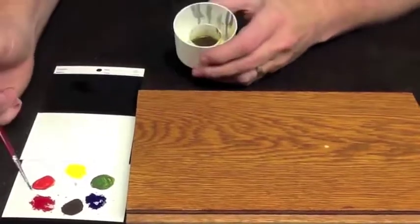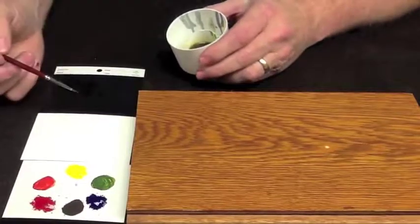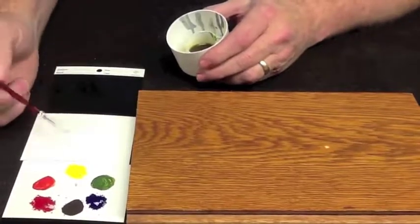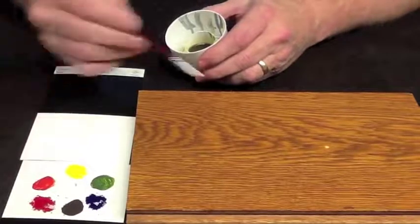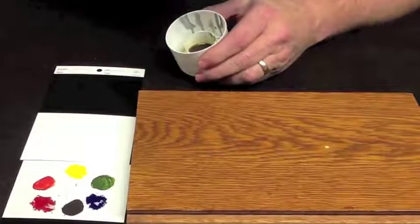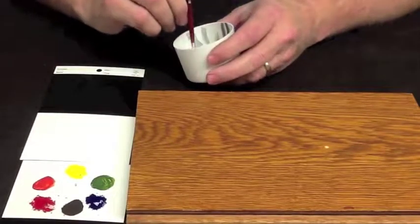So we're going to start with our primary colors, and I've got a little clear material here that I'll use as the vehicle for the powders. The powders themselves have no binder. I could actually mix these with water and apply them, but they wouldn't stay in place because there's no binder to hold them where we need to have the powder.